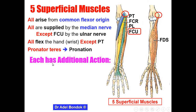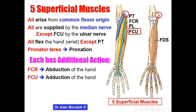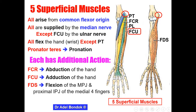Each muscle has an additional action. Flexor carpi radialis: abduction of the hand. Flexor carpi ulnaris: adduction of the hand. Flexor digitorum superficialis: flexion of the metacarpophalangeal joint and the proximal interphalangeal joint of the medial four fingers. Regarding palmaris longus, it may be absent.